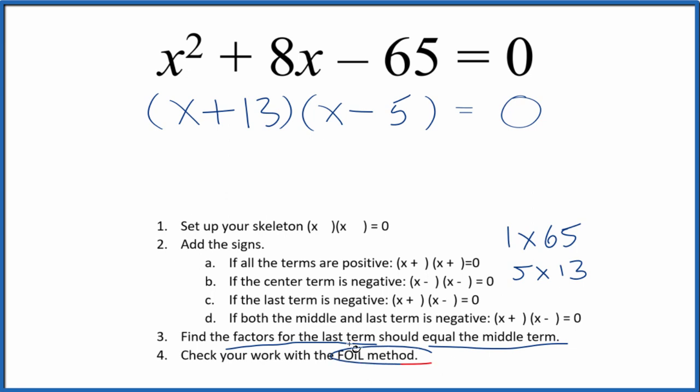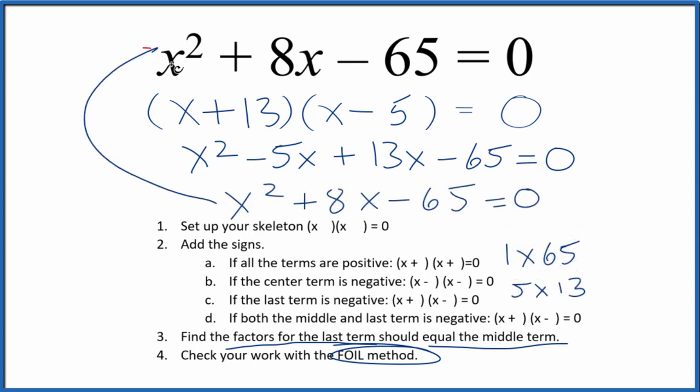We should check our work with the FOIL method though. Multiply the first, the outside, the inside, and the last terms like this. And then we can combine these two terms together and that's the same thing we started with, x squared plus 8x minus 65. So we've done this part correctly here.